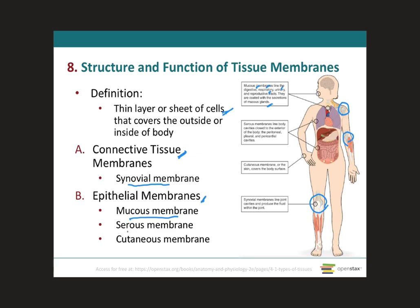The serous membrane lines the cavities that do not open to the outside and covers the organs located within those cavities. The serous membranes line the thoracic cavity, the pleural cavity that covers the lungs, and the pericardium that covers the heart. There is a fourth, called the peritoneum, which is a serous membrane located in the abdominal cavity that covers the abdominal organs and also forms double sheets of mesenteries that suspend many of the digestive organs.